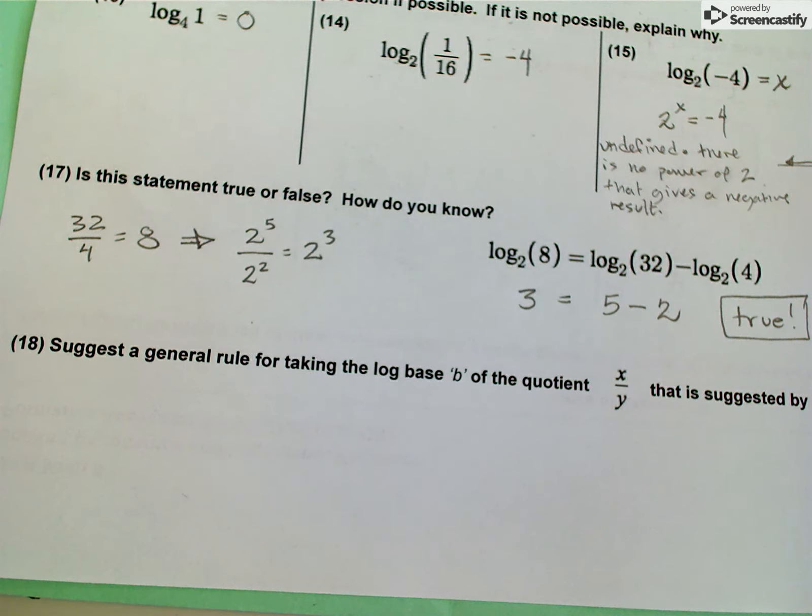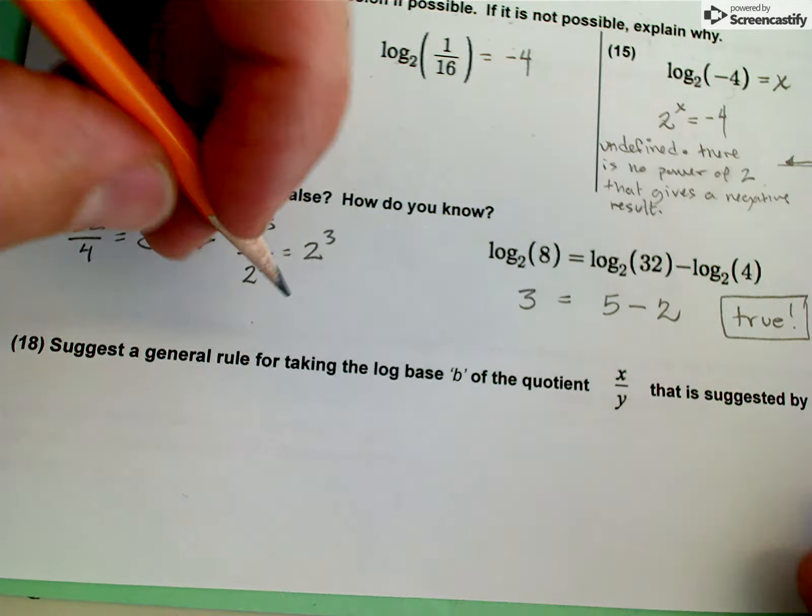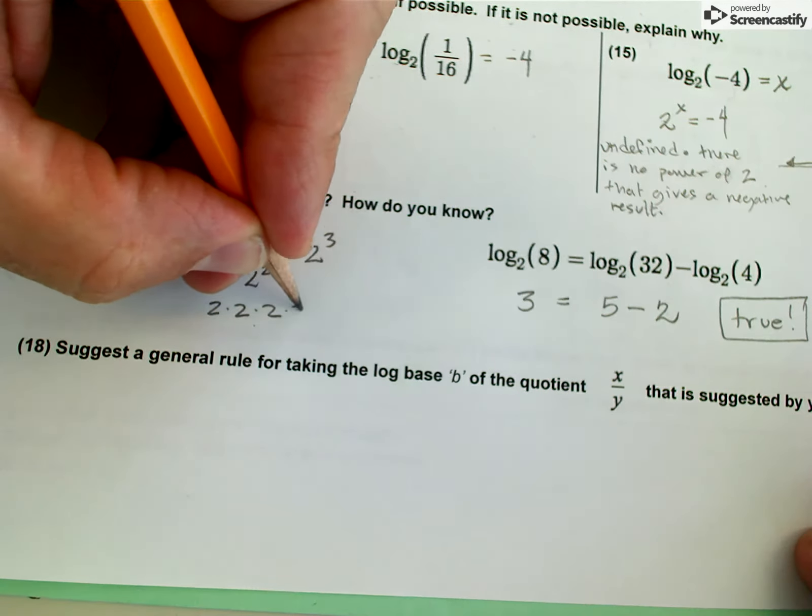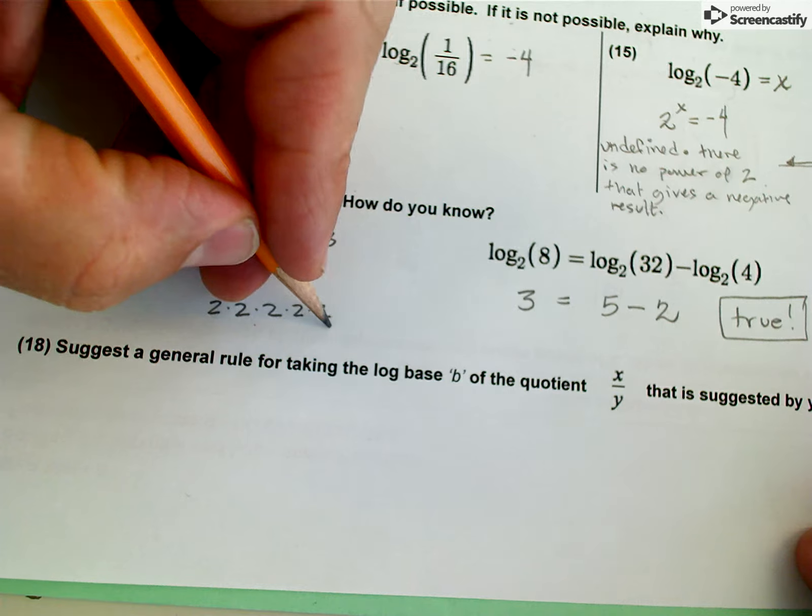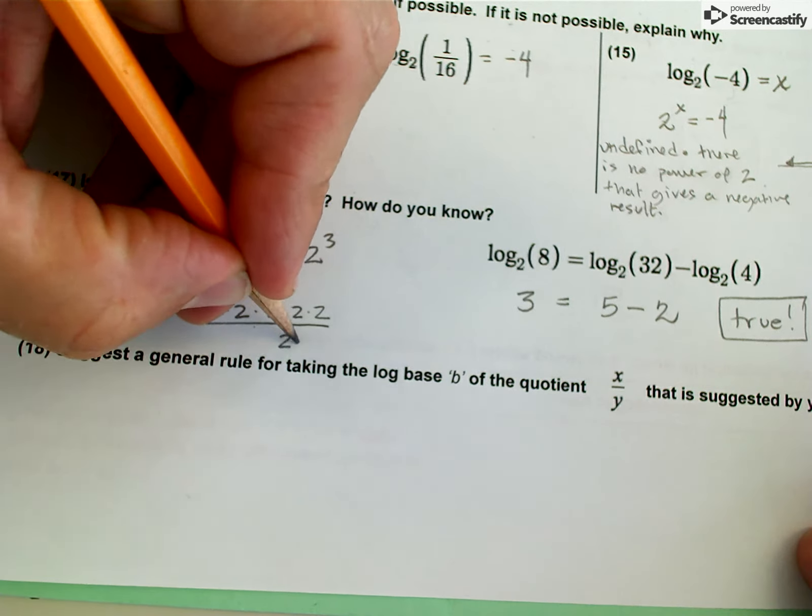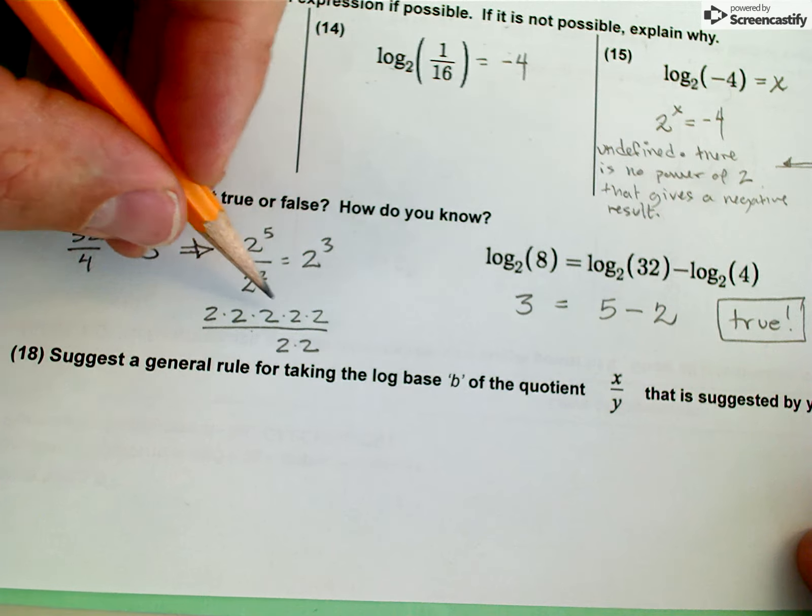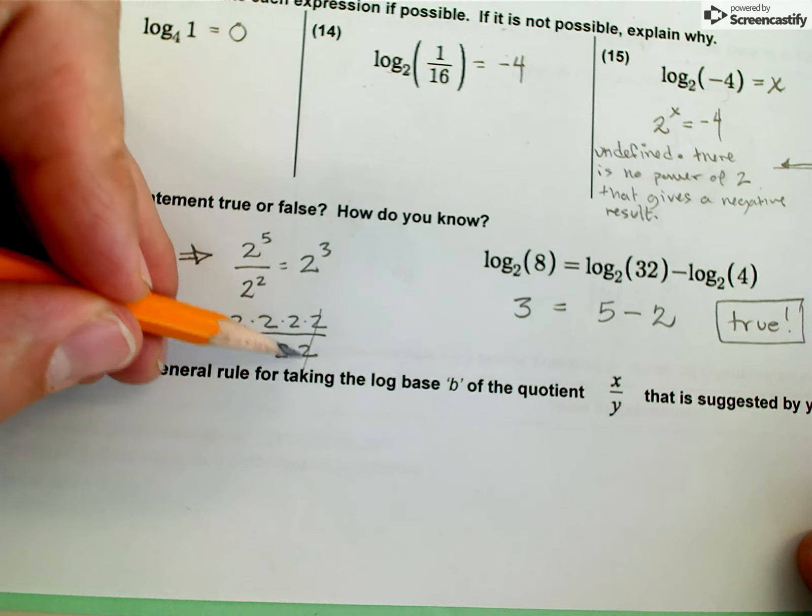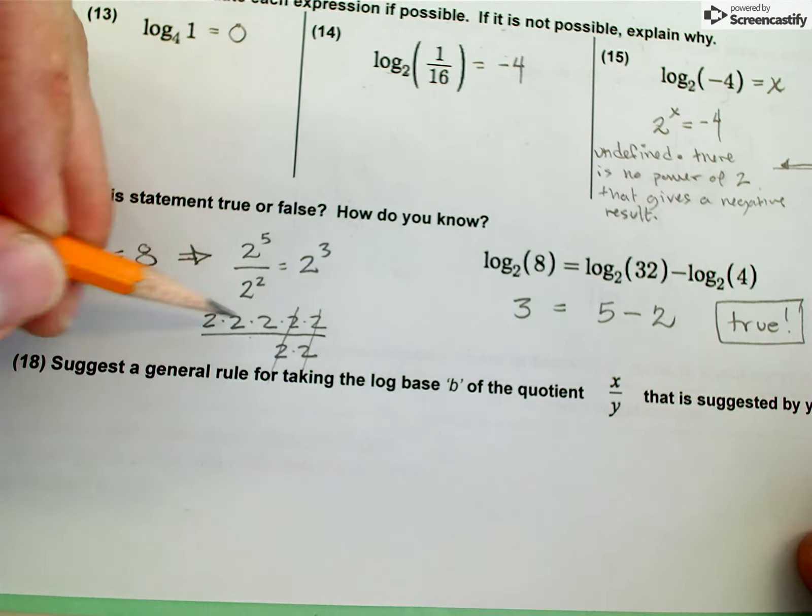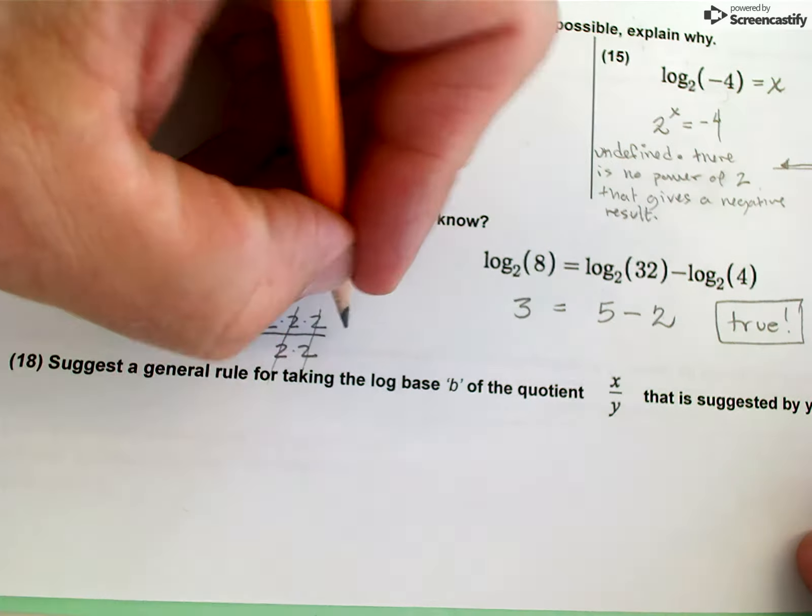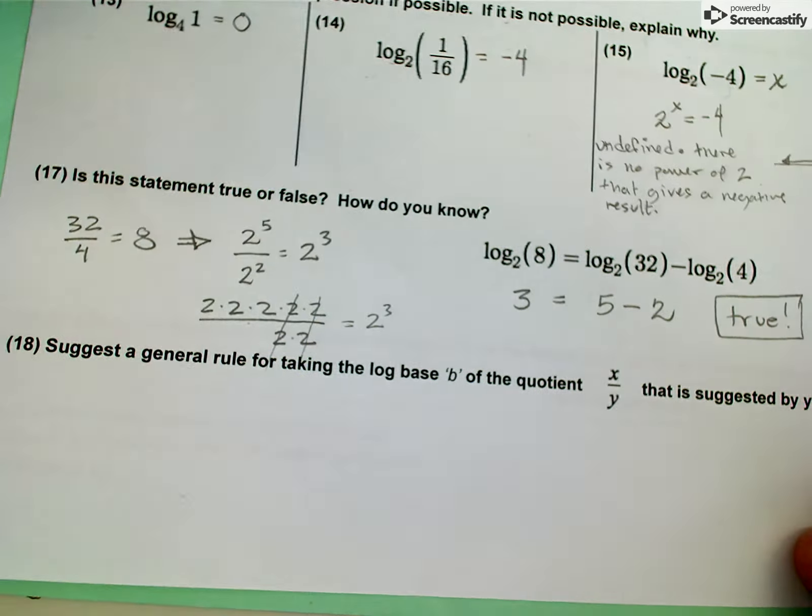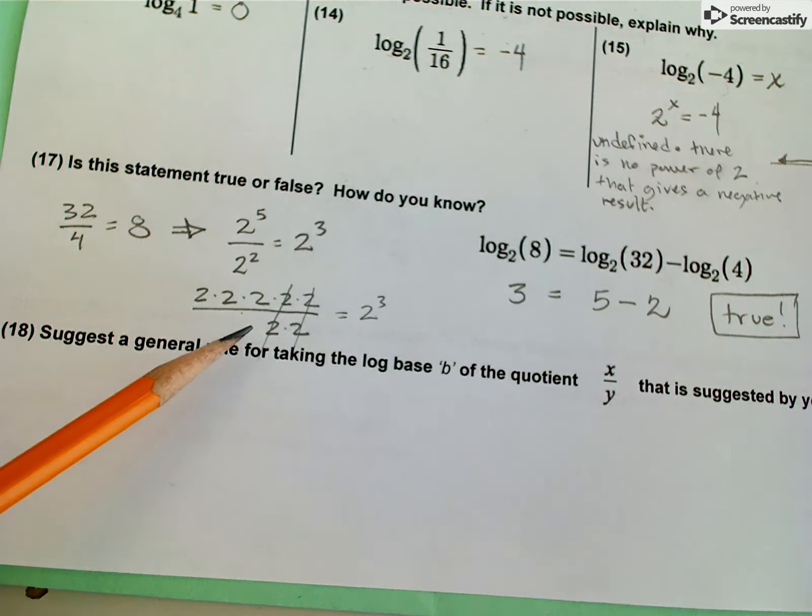Just to drive the point home a little bit more, I can multiply out these five 2s and divide them by 2 squared. Notice that 2 divided by 2 is 1, 2 divided by 2 is 1, and I'm just left with these three 2s here, which gives me 2 to the third power. So this is why the quotient rule works.